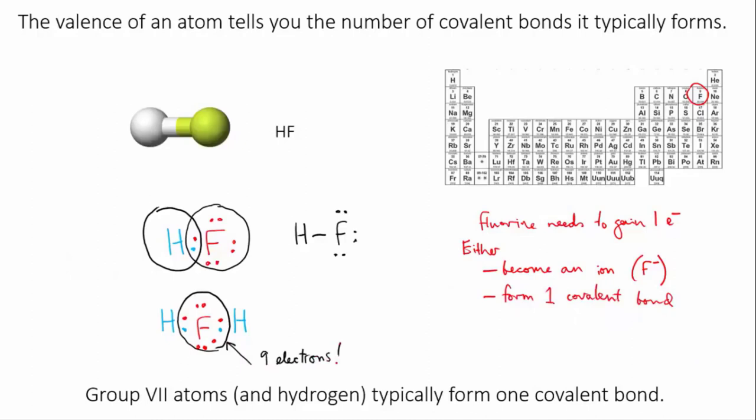So the extra electron would have to go up into the next level, the third electron level. This would mean the fluorine atom no longer had a full outer shell, which is energetically unfavourable and means the molecule would be unstable and would fall apart.